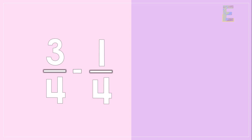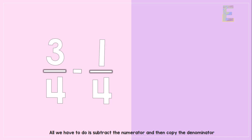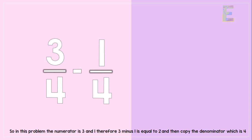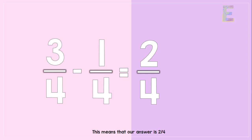Now let's have another example: 3 over 4 minus 1 over 4. All we have to do here is subtract the numerators and then copy the denominator. In this problem the numerators are 3 and 1, therefore 3 minus 1 is equal to 2, and then copy the denominator which is 4. This means that our answer is 2 over 4.